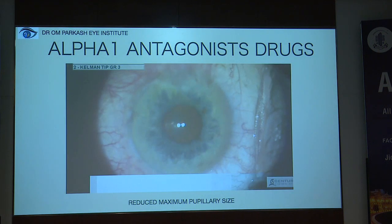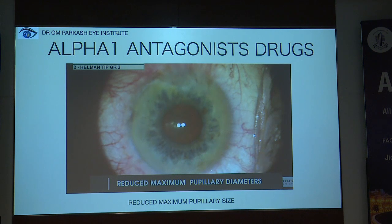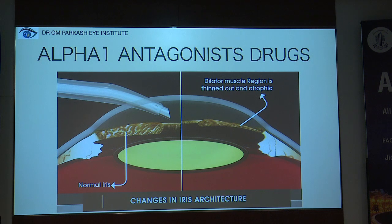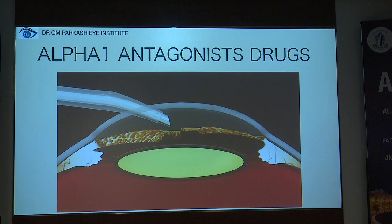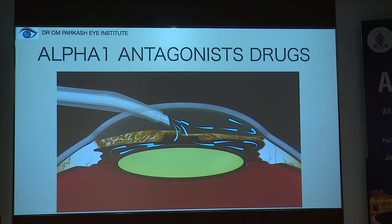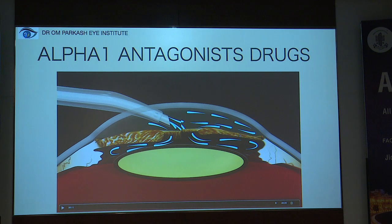There is a reduced maximum pupillary size. The iris structure gets changed because of blockage and disuse — the dilator muscle region becomes thinned out and atrophic. Whenever there is an excess of fluid to the posterior aspect of the iris, because of the thinned-out iris, there is increased billowing in response to the fluidics in the anterior chamber.